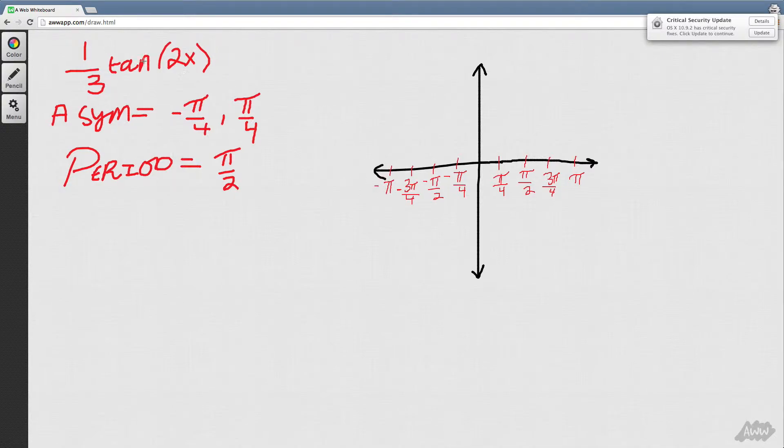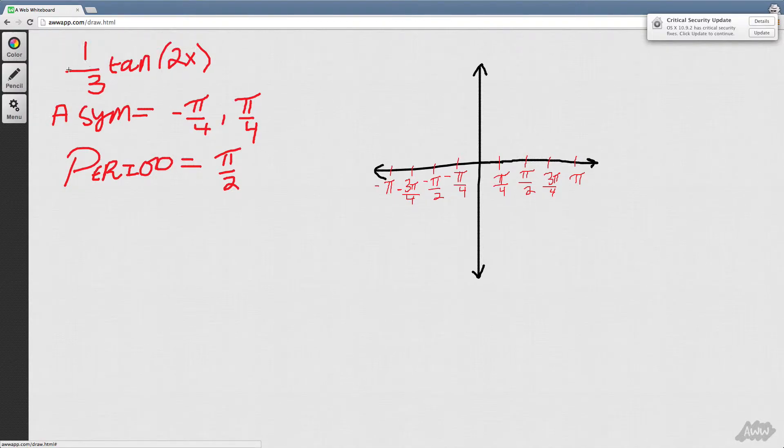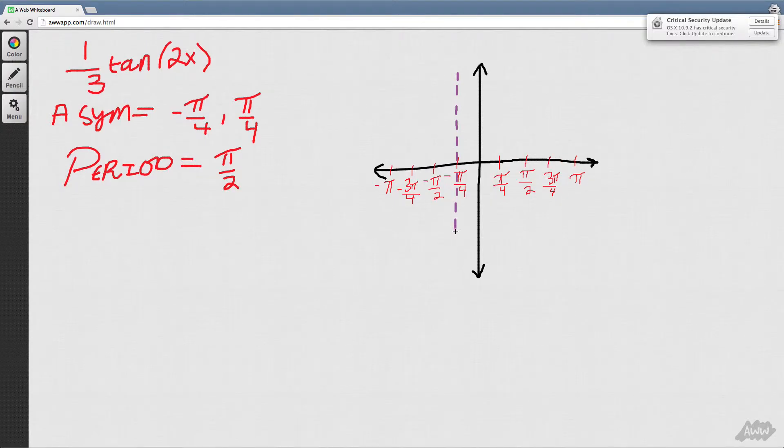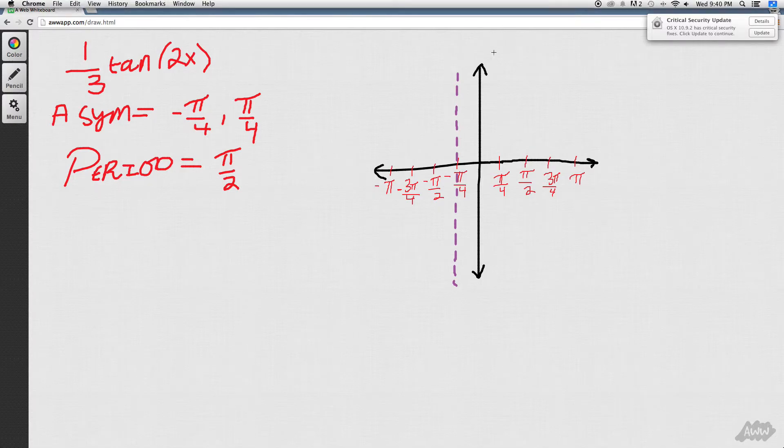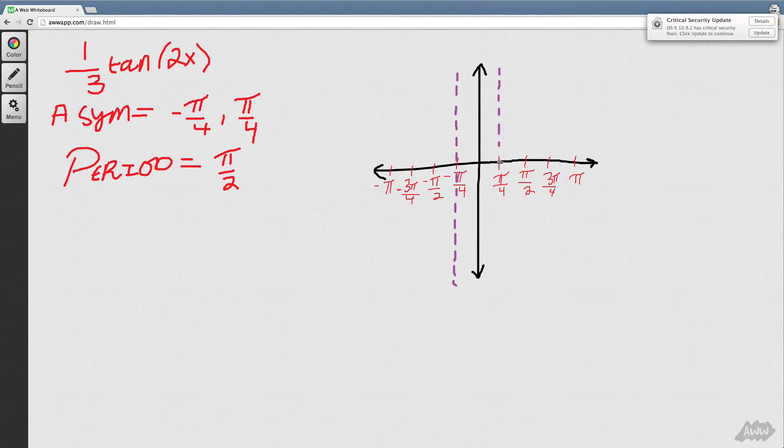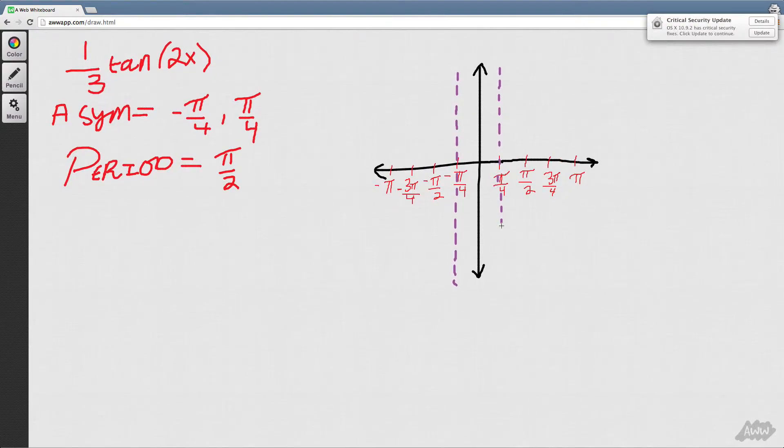So we need another color here. We know that our asymptotes are negative pi over 4 and pi over 4. So they're going to go here. And asymptotes are typically drawn dashed.